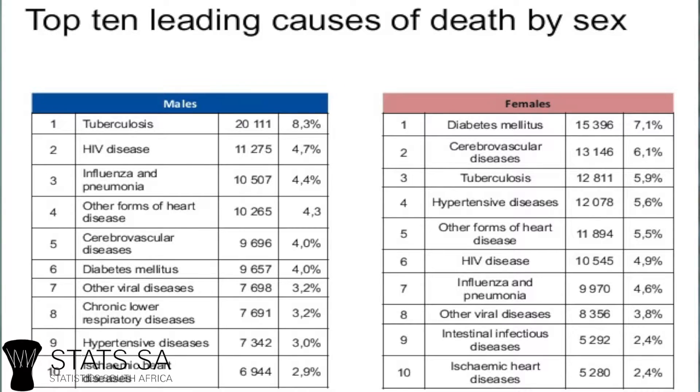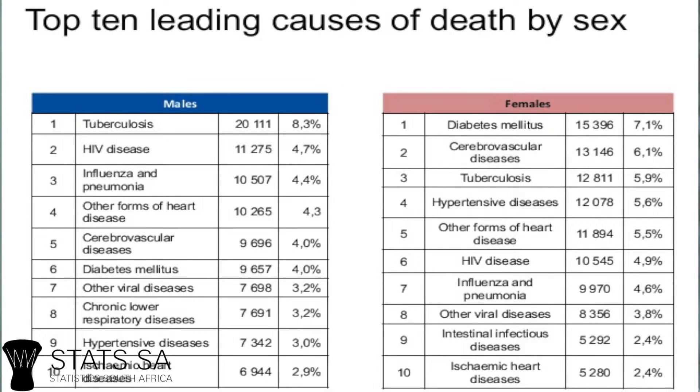Tell us the story of TB versus diabetes. Diabetes is the number one killer amongst women in 2015, killing about 15,000 people, while tuberculosis is killing about 20,000 males. When you look at the age pattern of these two diseases, tuberculosis affects those in the 30 to 50 age range and below for males. For females, diabetes knocks off those who are about 65 and above. So you can see a symmetry, both in terms of sex and age distribution, in how these two causes of death manifest themselves.